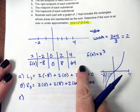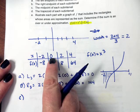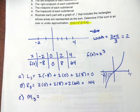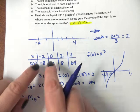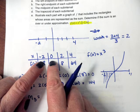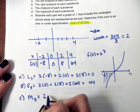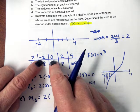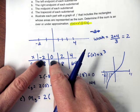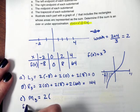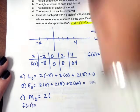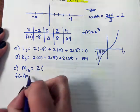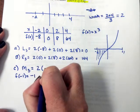We've already constructed our table. The width of each rectangle is two. When I want to do a midpoint Riemann sum with three subintervals, looking at the first rectangle from negative two to zero, the width is two. The height comes from the midpoint between negative two and zero, which is negative one. So f of negative one gives me negative one.